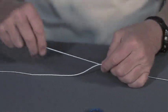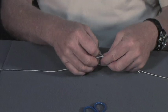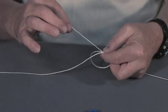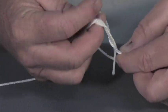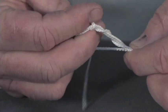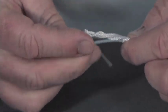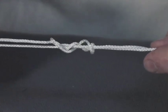Take the tag end, form an overhand loop, and again take the tag end and bring it through the loop four or five times, and then pull on both ends.